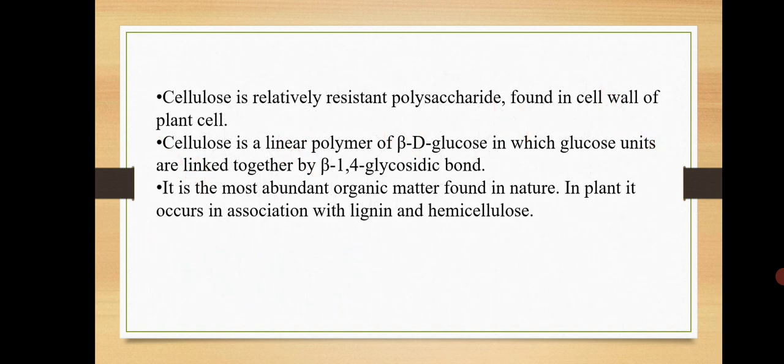Cellulose is a polymer — it is a polysaccharide found in the cell wall of plants. Plant cell wall is made up of cellulose. It is a linear chain; it doesn't consist of any type of branch. It is a linear chain consisting of glucose subunits joined together by beta-1,4 glycosidic bond. It is abundantly found in nature in the form of cell wall in plants.